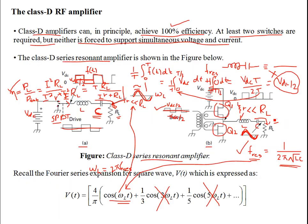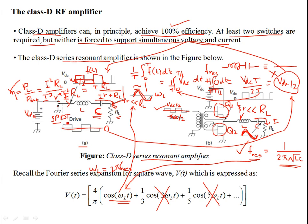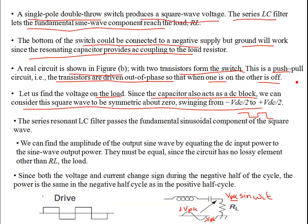If the DC was equal to VDC/2 and then you shift the signal up by VDC/2, this gives you the asymmetric waveform with no negative excursion — but due to the coupling capacitor there is no DC component of VDC/2 at the output. The LC circuit passes the fundamental sinusoid at its resonant frequency. We can find the amplitude of the output sine wave by equating the DC input power to the sine wave output power.